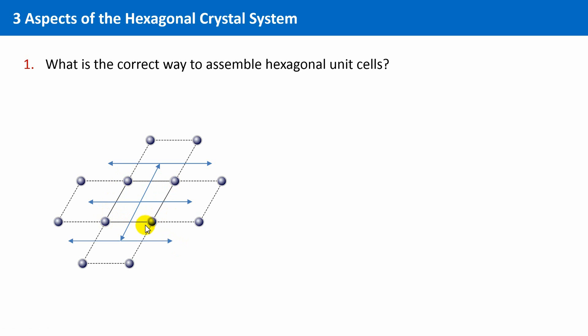If we translate our unit cells, we get something like this. If we now sketch in the hexagonal shape of a prism, then we see that this is not composed of three unit cells as one would think at first sight.